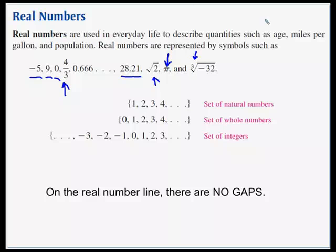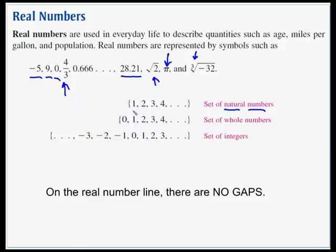We can take these real numbers and break them down into subsets. The first one are the natural numbers — that's just the whole counting numbers, the positive numbers: 1, 2, 3, 4, 5, and so on. If we add 0 to that, we get the whole numbers.